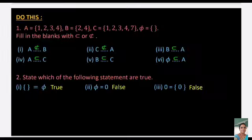Do this: Given A = {1, 2, 3, 4}, B = {2, 4}, C = {1, 2, 3, 4, 7}, and φ = null set, fill in the blanks with ⊆ or ⊄. A ⊄ B because not all elements of A are in B. C ⊄ A because not all elements of C are in A. But B ⊆ A, B ⊆ C, A ⊆ C, and φ ⊆ A — the null set is a subset of every set.